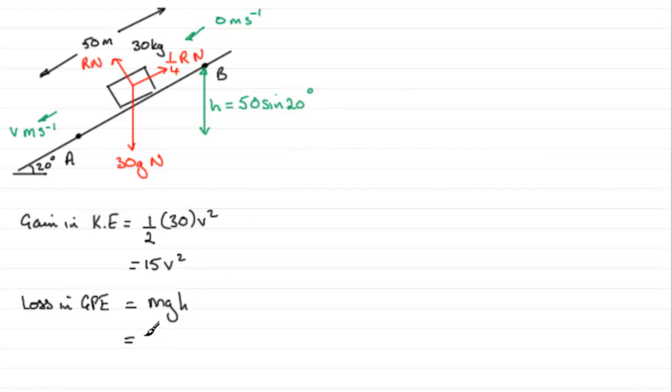So if we fill this in here, we've got m being 30, g being 9.8, and h being the 50 sine 20 degrees. And if you work that out, we can work that out in the calculator, you end up with 5027.6961 and so on. And that would be measured in joules. So now we know what our loss in energy is going to be.